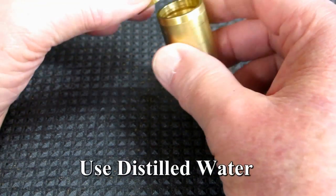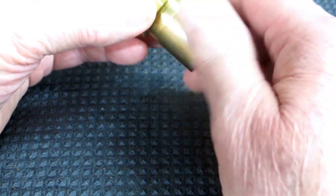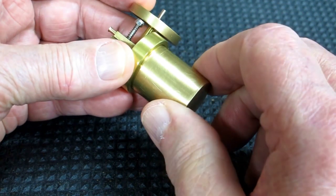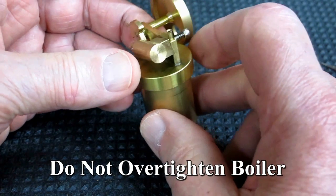And I use distilled water. It won't have any calcium or minerals in it that will cause this thing to scale up. I tighten this until I just touch that O-ring, and then I give it about a quarter turn. That's plenty.